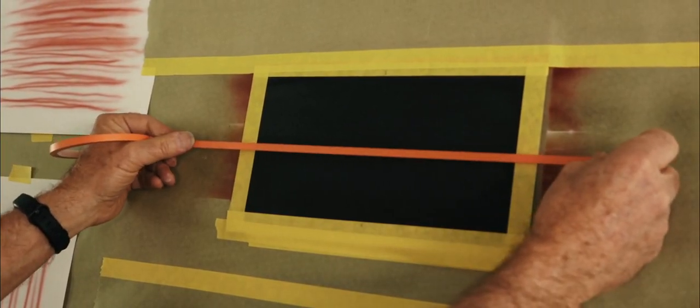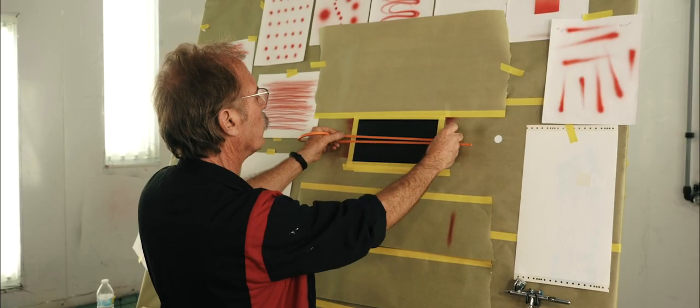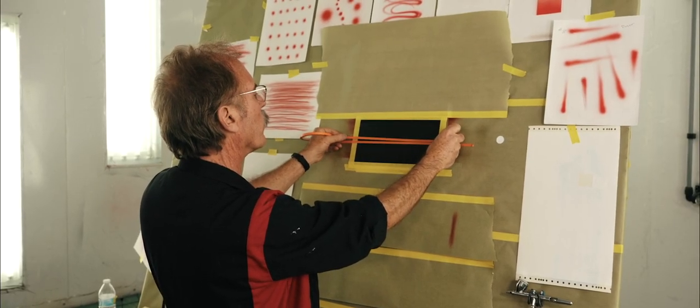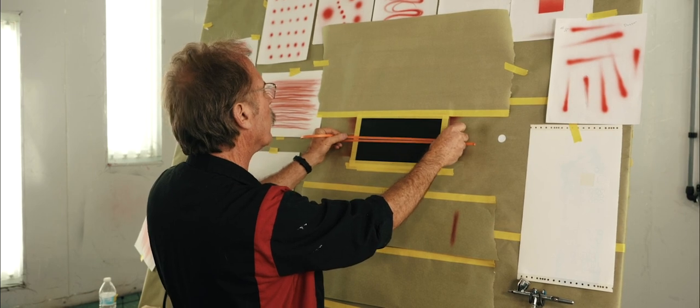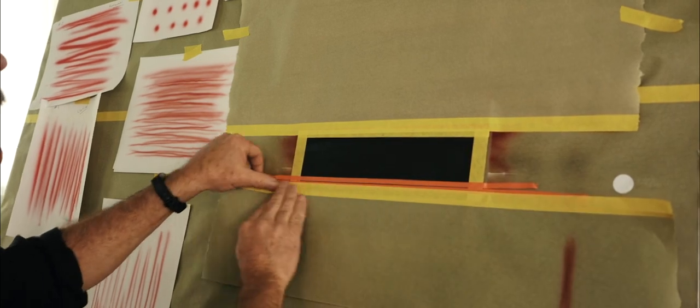We need to tape off the horizon line so that we actually have a reference between our sky and our ocean. And that'll also allow us something to tape to so that we can do those two pieces separately.